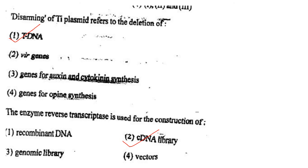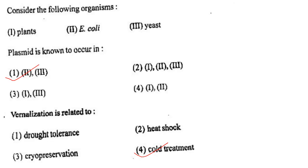Next one: The enzyme reverse transcriptase is used for the construction of option 1, recombinant DNA; option 2, cDNA library; option 3, genomic library; option 4, vectors. Answer is option 2: cDNA library.